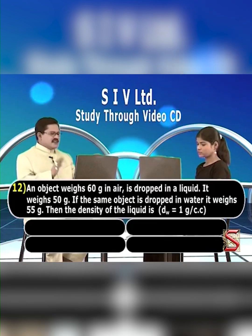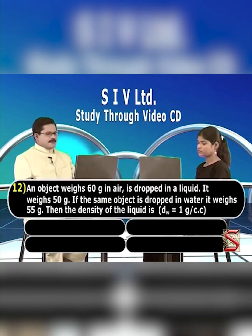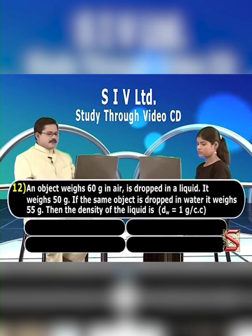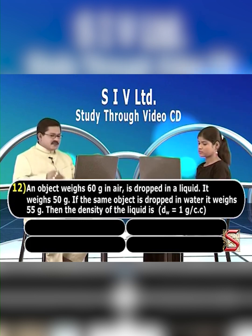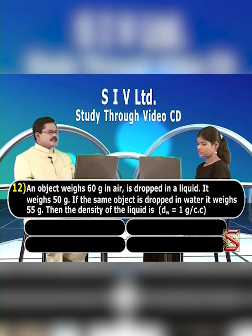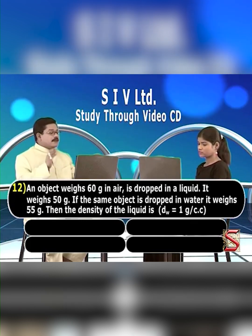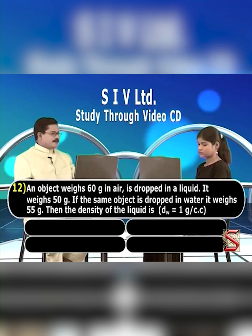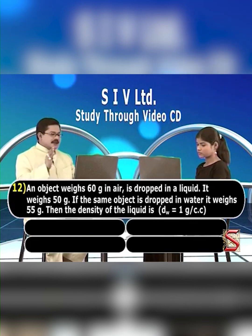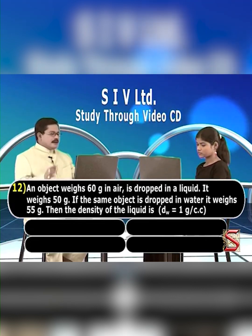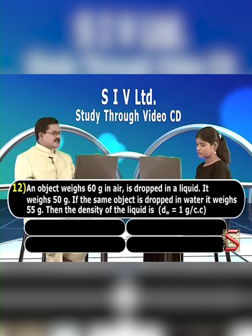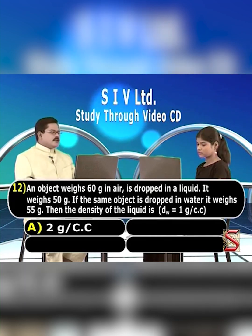An object weighs 60 grams in air. It is dropped in a liquid and weighs 50 grams. If the same object is dropped in water, it weighs 55 grams. Find the density of the liquid, given that the density of water is equal to 1 gram per cc.